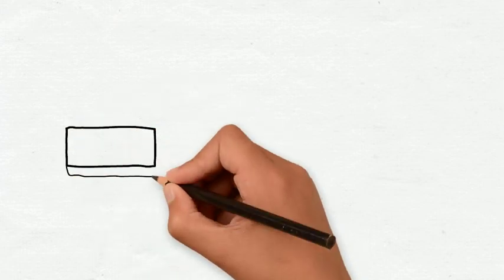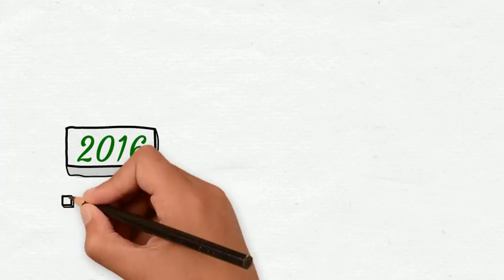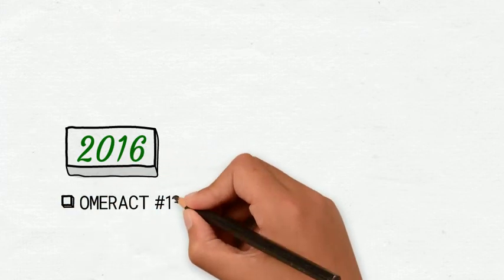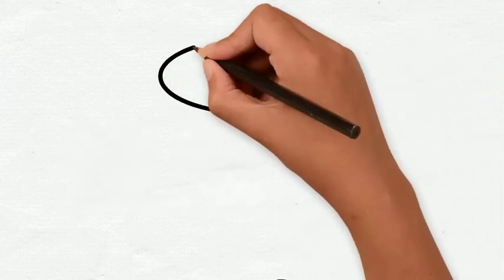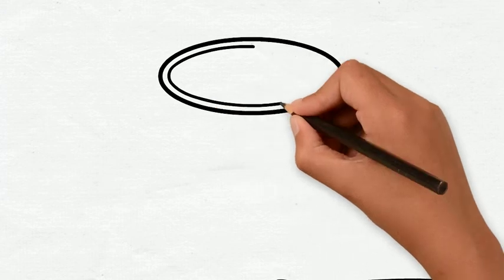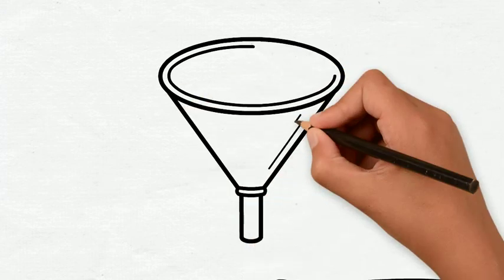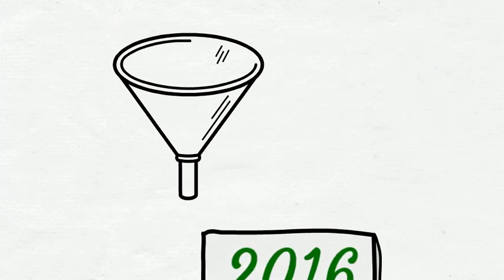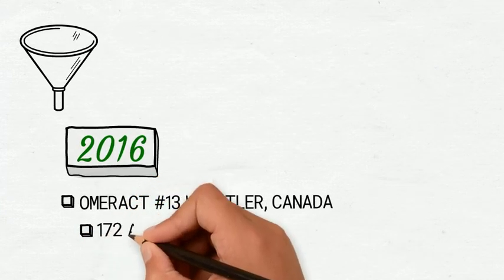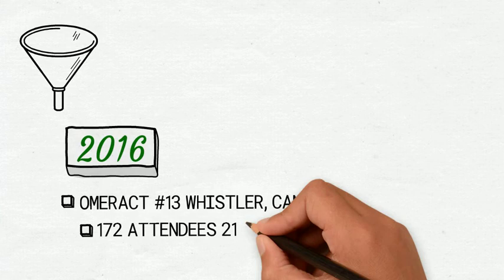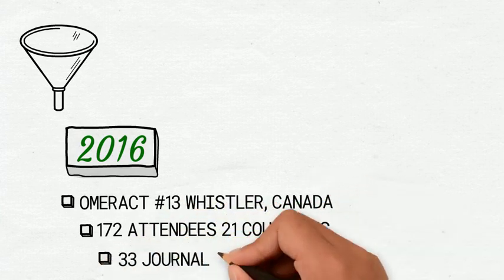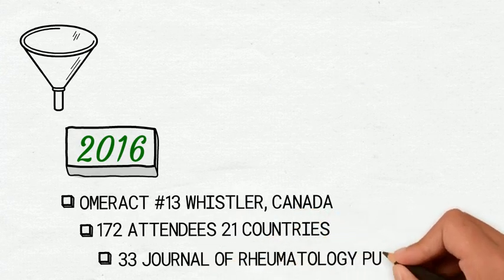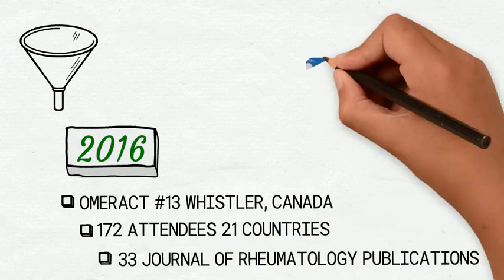The 2016 meeting in Whistler, Canada was the 13th OMERACT meeting and was a success with nearly 200 participants. One major focus of the meeting was the implementation of the instrument selection part of the OMERACT Filter 2.0 that incorporates a number of clinimetric advances that have occurred since the original filter. Truth, discrimination, and feasibility continue to be the pillars of the filter unique to OMERACT. But as part of the transition to the new filter 2.1, in order to select the most promising instruments, participants presented more detailed data on concept match and feasibility.